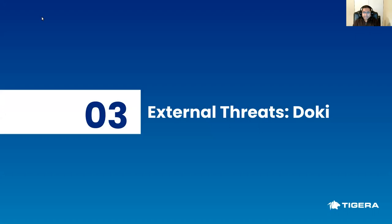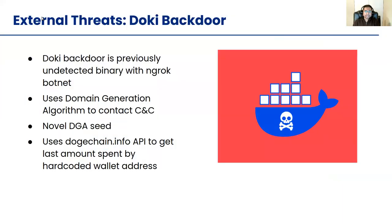Another threat vector from a Kubernetes perspective is Doki, which is a backdoor. The reason to mention this is that it uses a domain generation algorithm to contact its C2. While this is not a new technique, they used a really novel DGA seed in their operation — they used the Dogecoin API. Dogecoin is a popular cryptocurrency available on the internet.